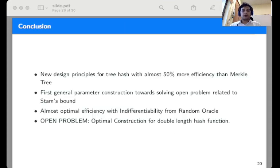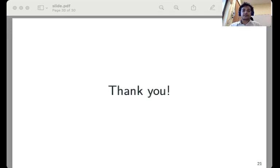To conclude, we presented new design principles for tree hash with almost 50 percent more efficiency than Merkle tree. This is the first general parameter construction towards achieving Stam's bound. Interestingly, we get an almost optimal efficiency with indifferentiability from random oracles as well. A natural open problem is to achieve Stam's bound for double length hash functions. This concludes my presentation. Thank you.